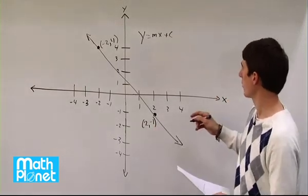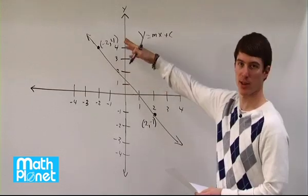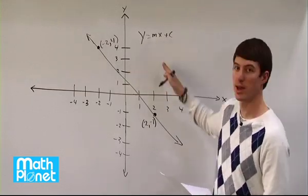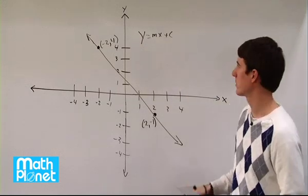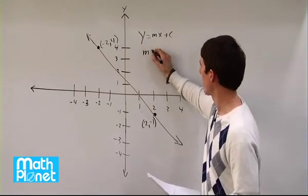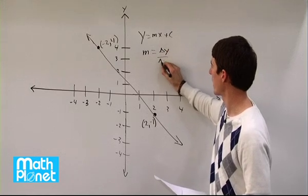So what we want to do here is plug in these values to give us our slope m, and then we can see what the y-intercept is from there. So the equation for m is always rise over run, or delta y over delta x.